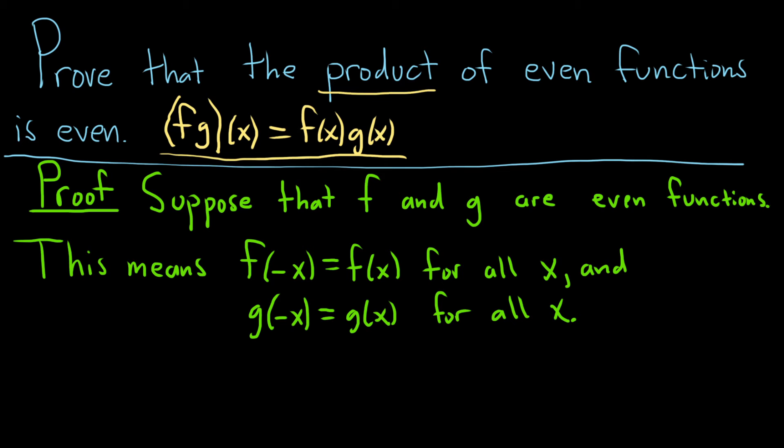So now let's just go ahead and look at that product. We need to show that it is even. We need to replace this value of x with negative x and see what happens. So then fg of an element negative x is equal to f of negative x times g of negative x.